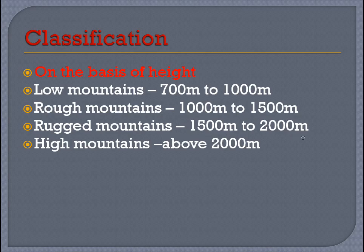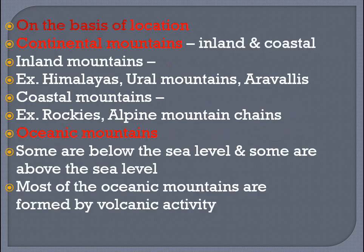Rugged mountains range from 1500 to 2000 meters in height, and high mountains are above 2000 meters. On the basis of location, they can be classified into continental mountains and oceanic mountains.